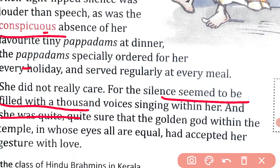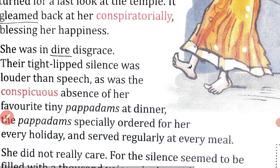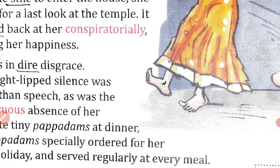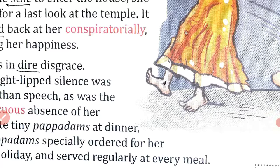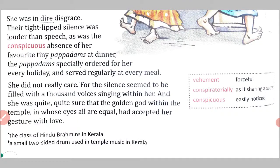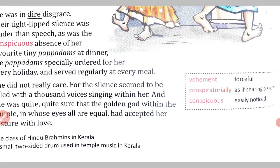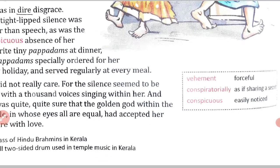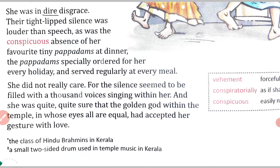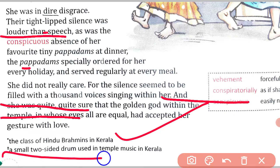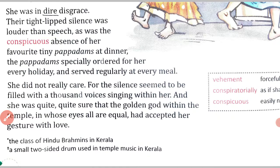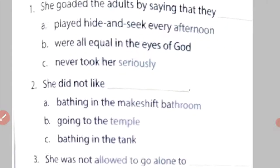This is all about this story — it is a very interesting and learning story from which we get the lesson of how she broke the custom and tradition, and proved that all are equal in the eyes of God. Her family will eventually realize what is right and wrong. Now the vocabulary: 'vehement' means forceful, 'conspiratorially' means as if sharing a secret, 'conspicuous' means easily noticed, 'Nambudiri' is the class of Hindu Brahmins in Kerala, and 'adakka' is a small two-sided drum used in temple music in Kerala.